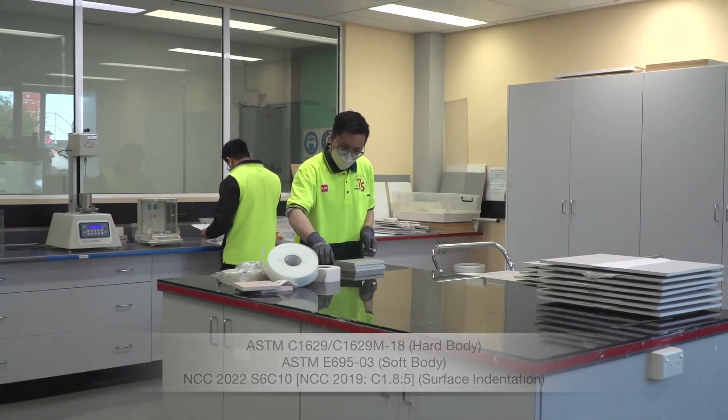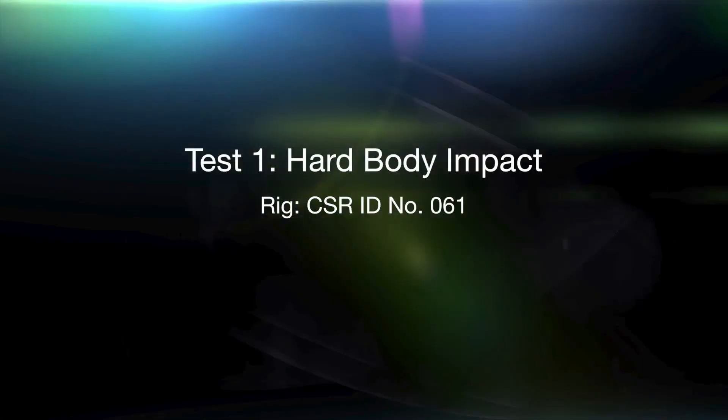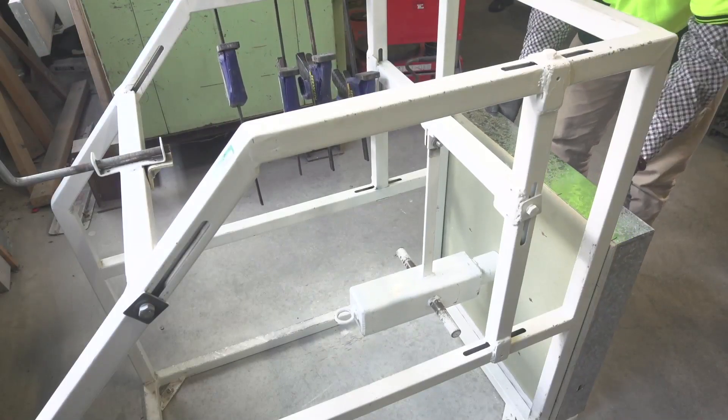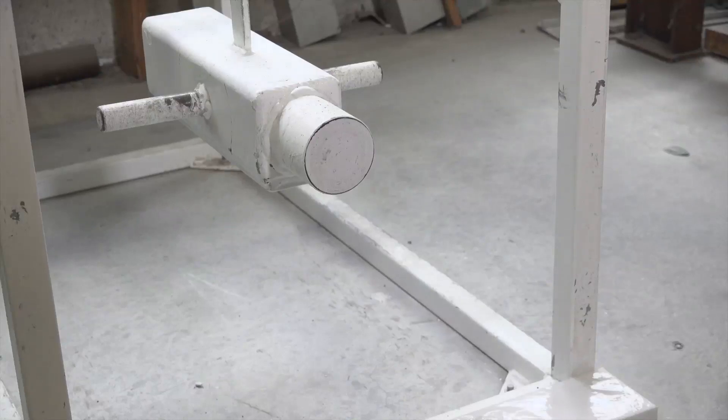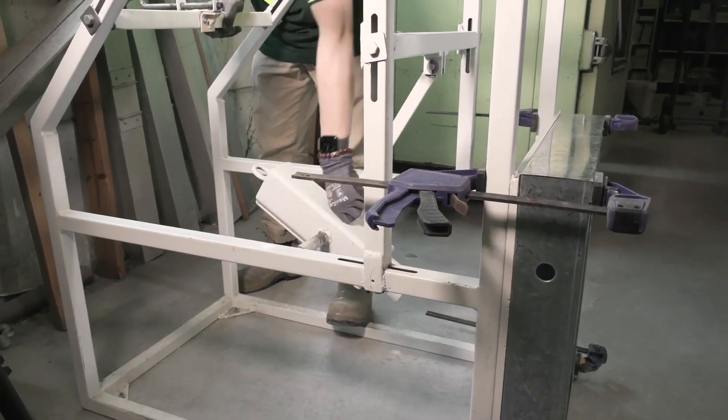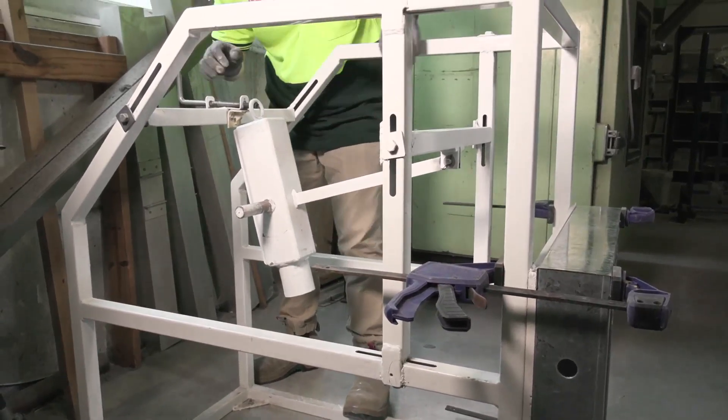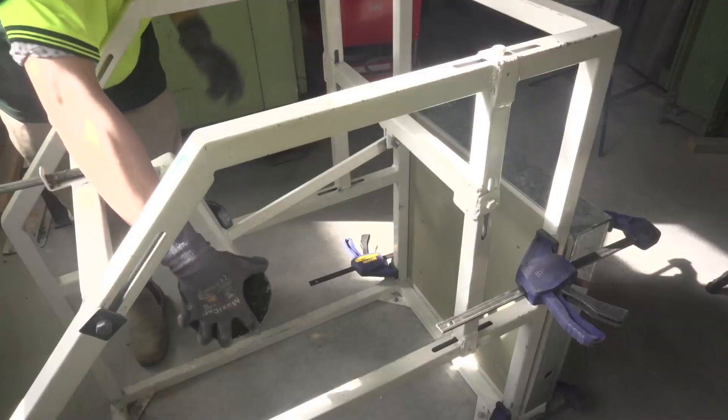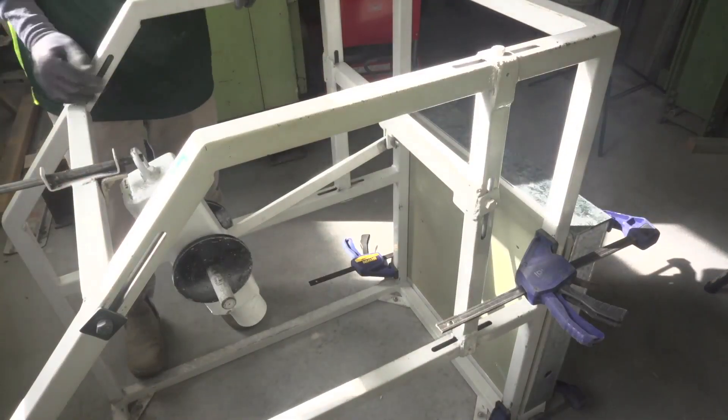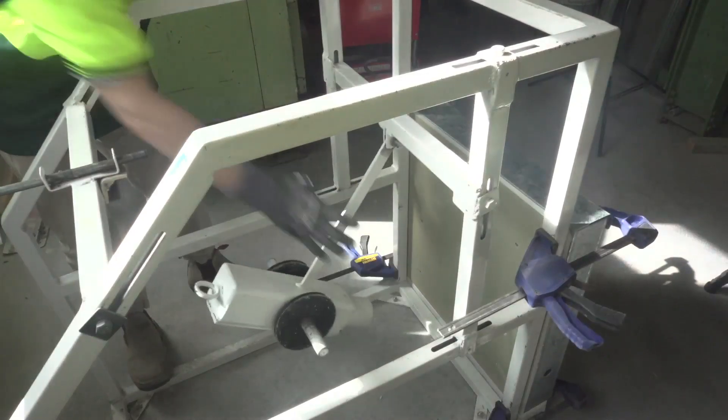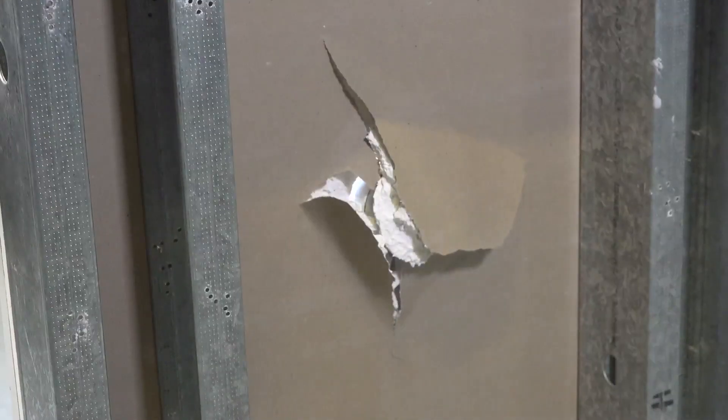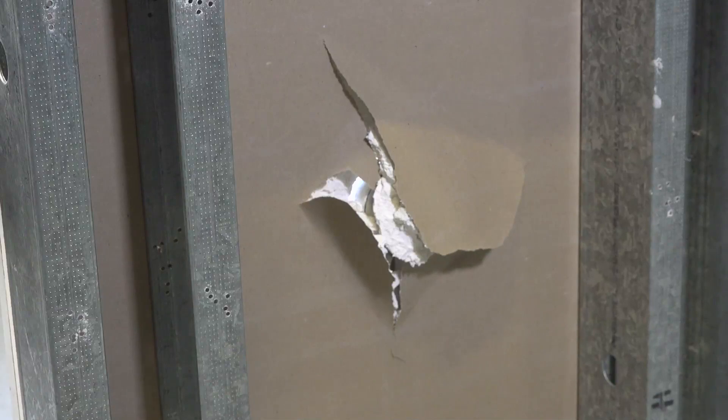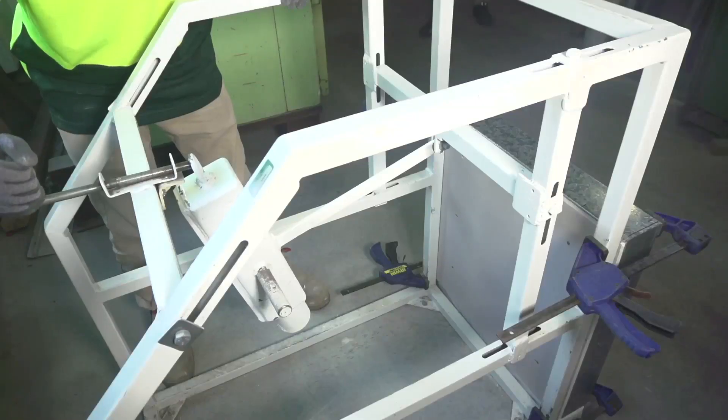The most extreme of these is the hard body impact test. A frame-mounted sample is clamped to a test rig, and a 9.55kg pendulum-mounted hammer is released from a height of 302mm to strike the surface. Weights are progressively added to the hammer and dropped onto samples until failure occurs, which is when the hammer penetrates to a depth exceeding the sample thickness. The failure impact energy is expressed in joules.